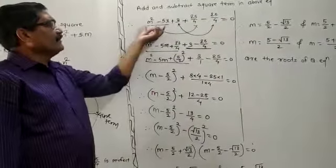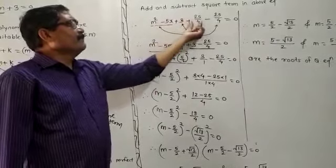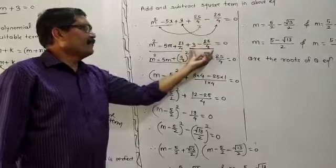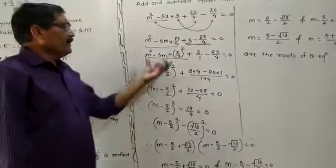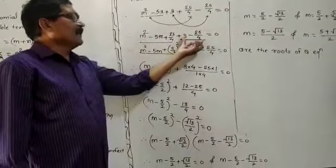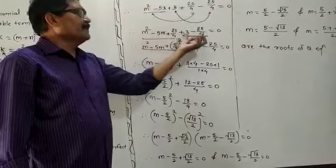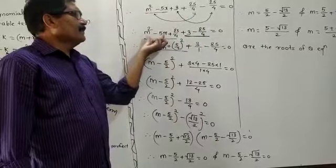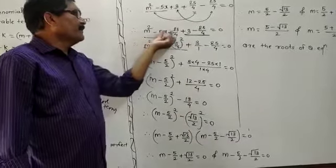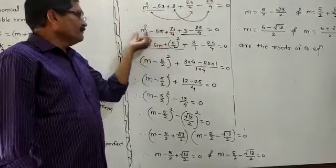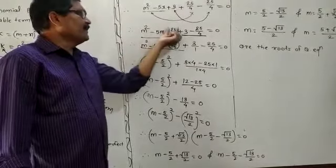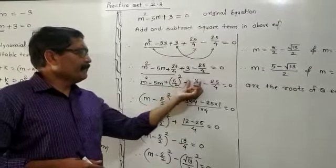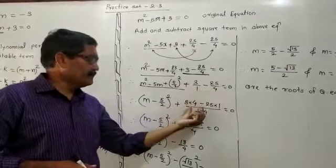You have to rearrange the equation: m squared minus 5m together with plus 25 upon 4, and plus 3 minus 25 upon 4, kept together. Then you have to write the first three terms and the last two terms. You have to take the square of the first three terms. If you want to write the square of the first three terms, write m as it is, then m squared minus 5m as it is, and this 25 upon 4 is the perfect square.